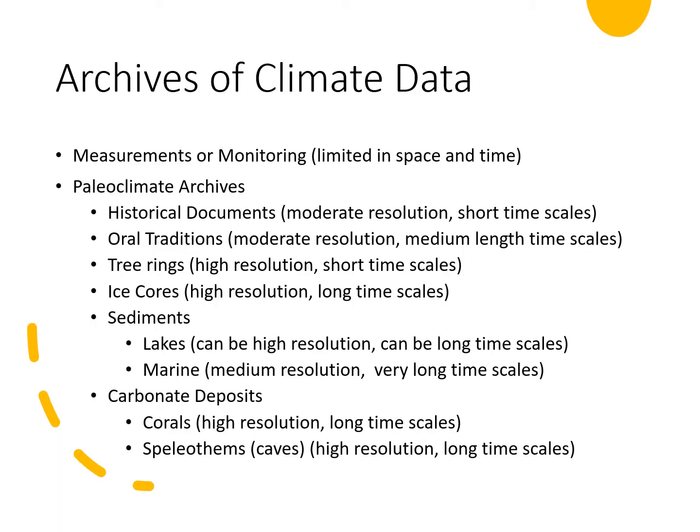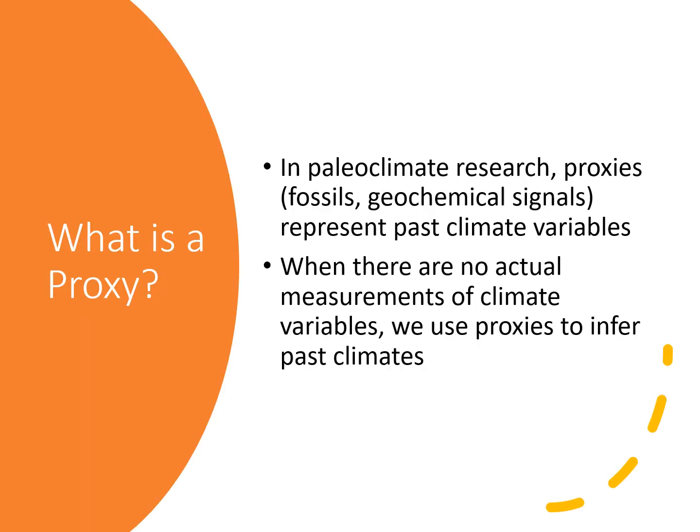In climate change science, archives refer to the source or storage of data. Modern measurements are an archive of climate data which, as we have seen, are limited in time and space. Paleoclimate archives include historical documents, oral traditions, tree rings, ice cores, marine and lake sediments, corals, and speleothems. The temporal resolution — that is, the frequency of observations and the time period covered for each archive — varies as is shown here. A proxy is a fossil or geochemical or biogeochemical signal that represents a particular climate variable. Archives often include multiple proxies. In the thin ice video, several proxies were used from the ice cores to determine different climate variables. Let's begin a review of paleoclimate archives and their proxies.